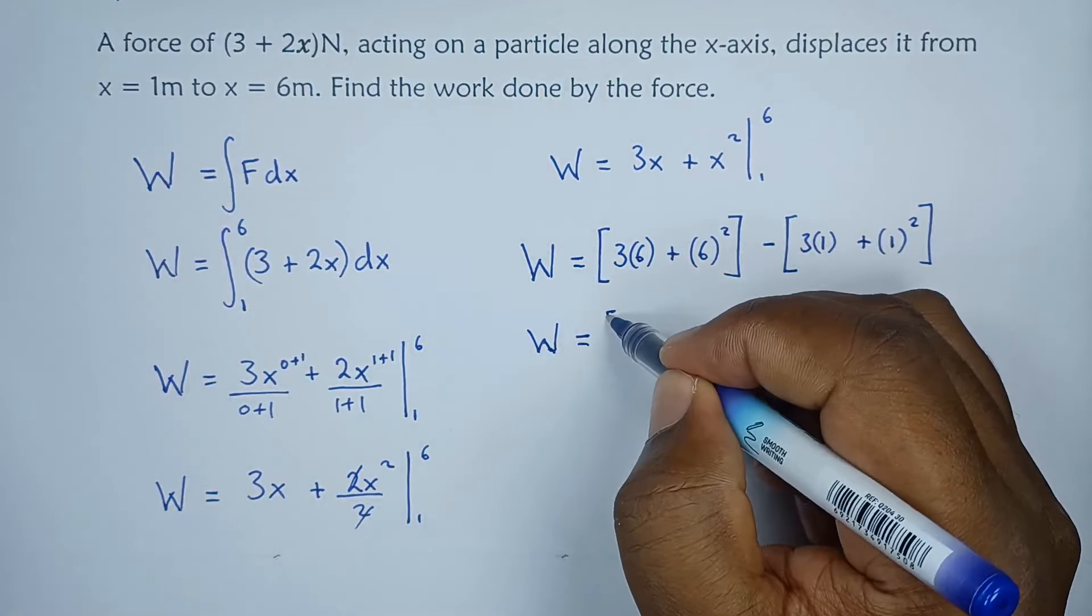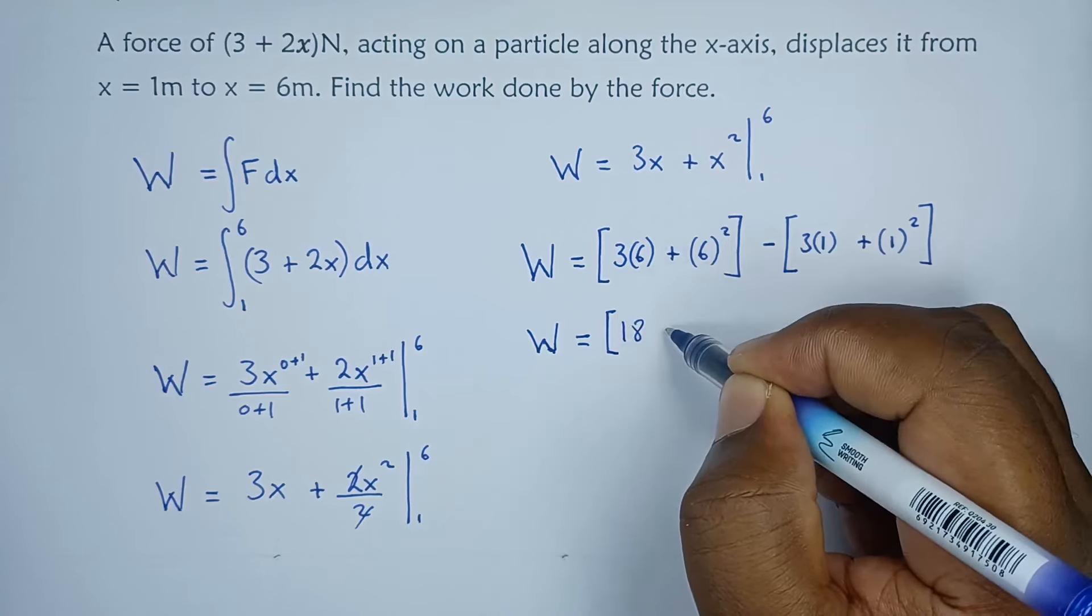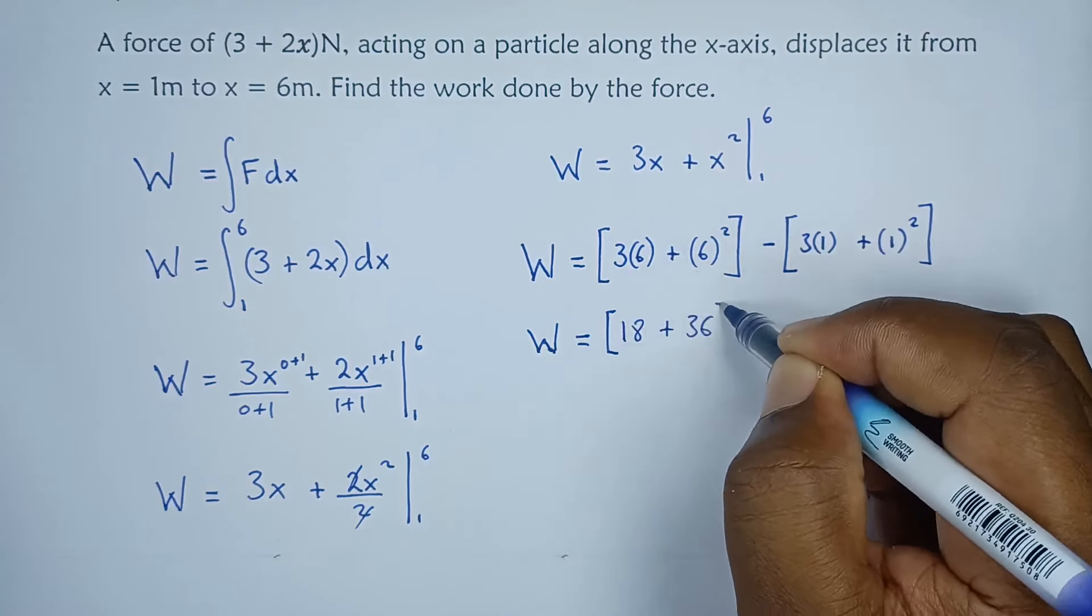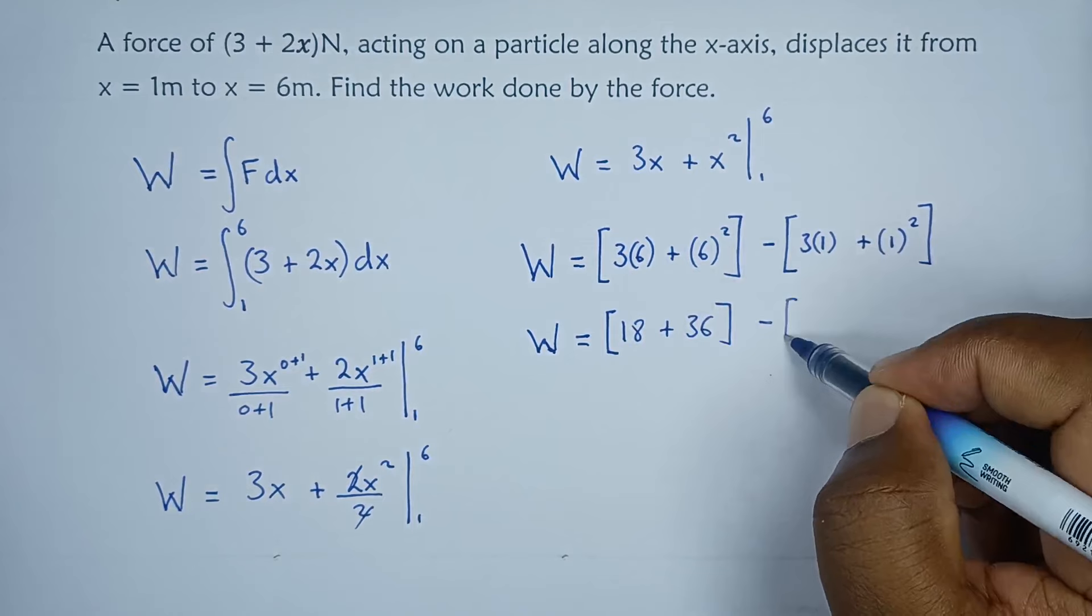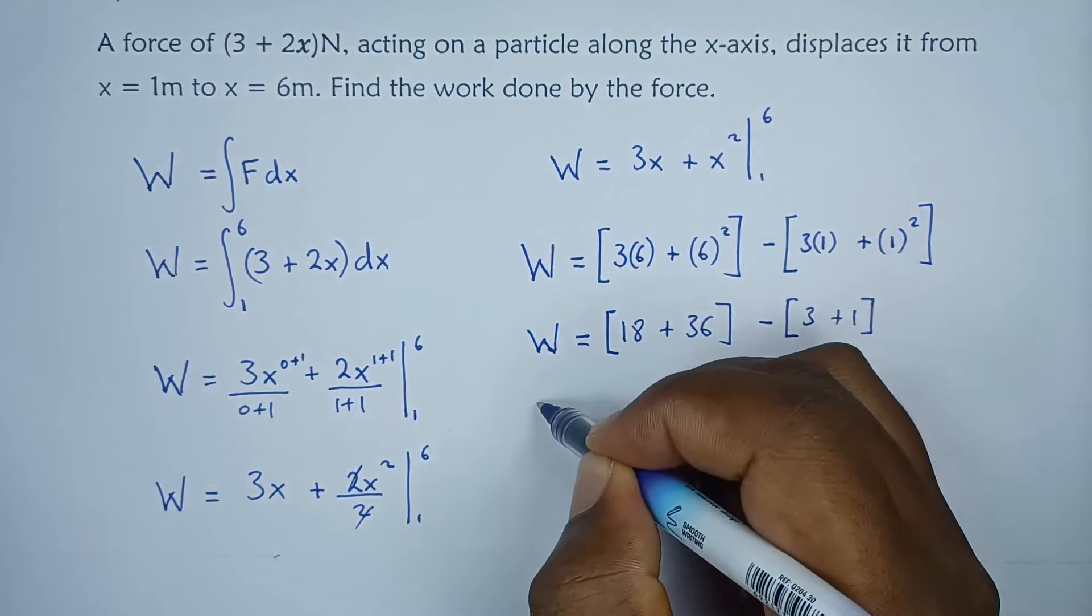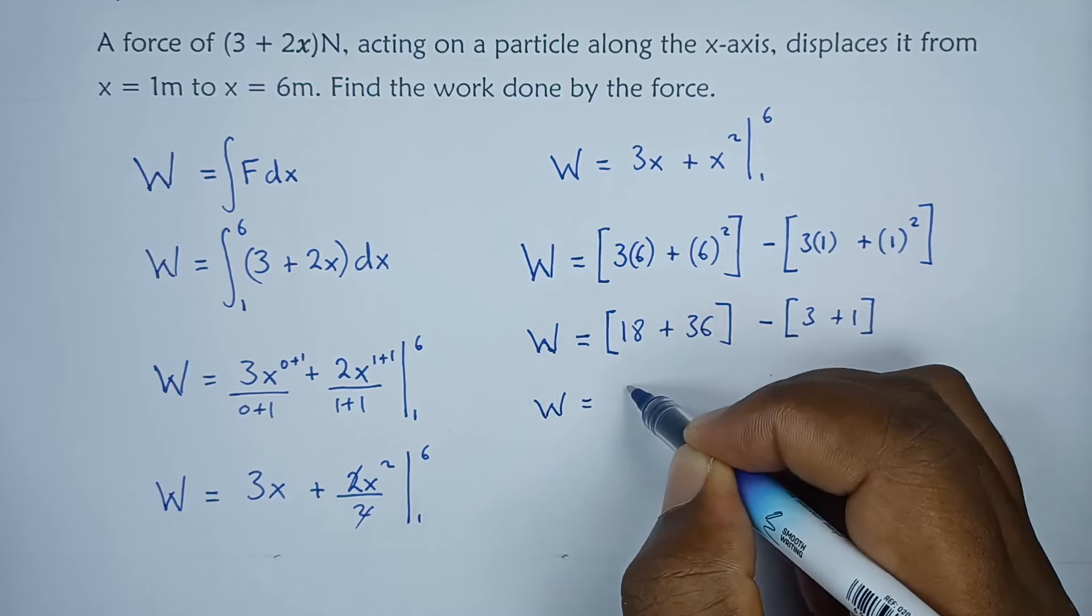So in this case work done will be equals to, this gives us 18 plus 36 minus three plus one.